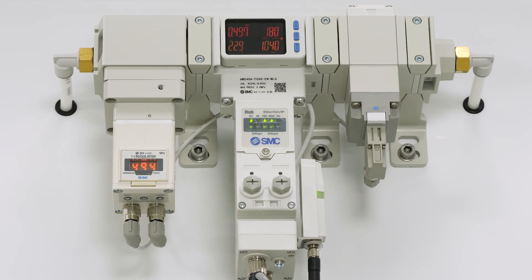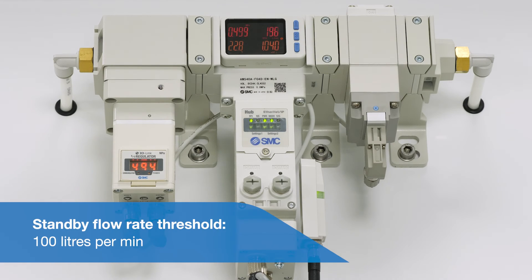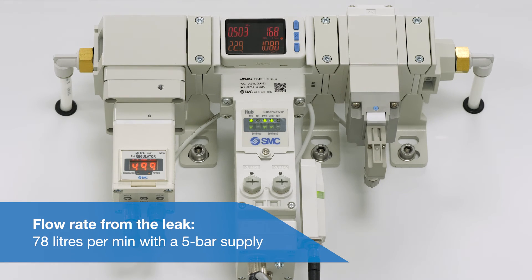In this demonstration, the standby flow rate threshold has been set to 100 litres per minute. So if the flow drops below 100 litres per minute, the machine is considered idle and only the leakage flow is present. The flow from the leak is approximately 78 litres per minute with the 5 bar supply.